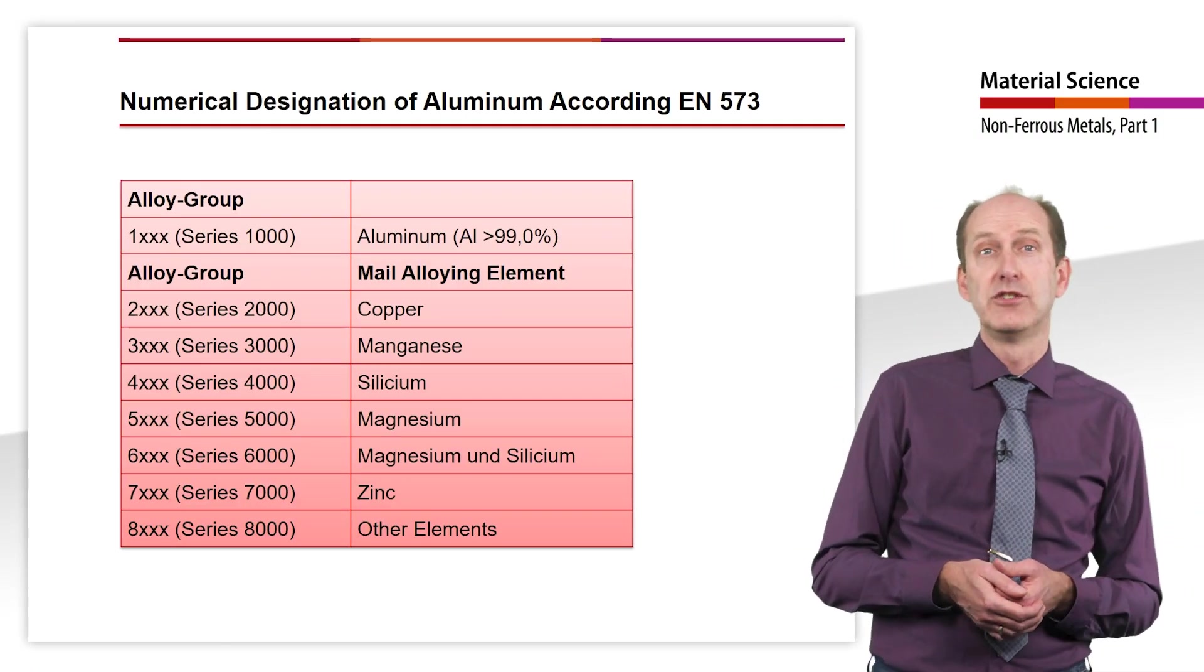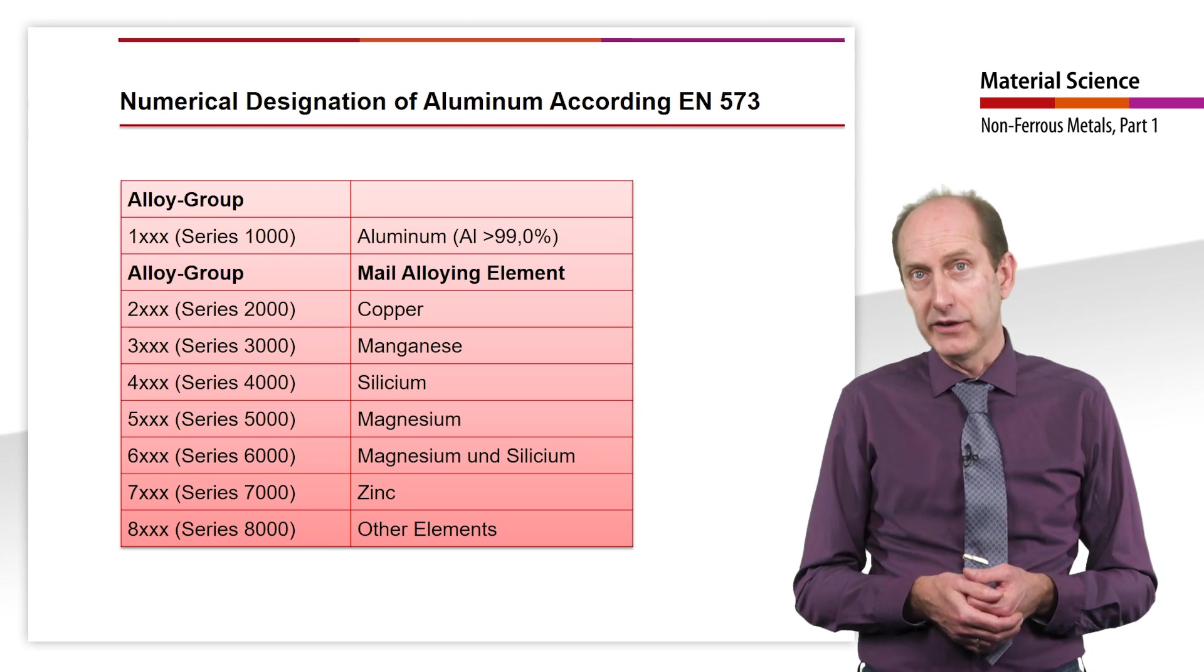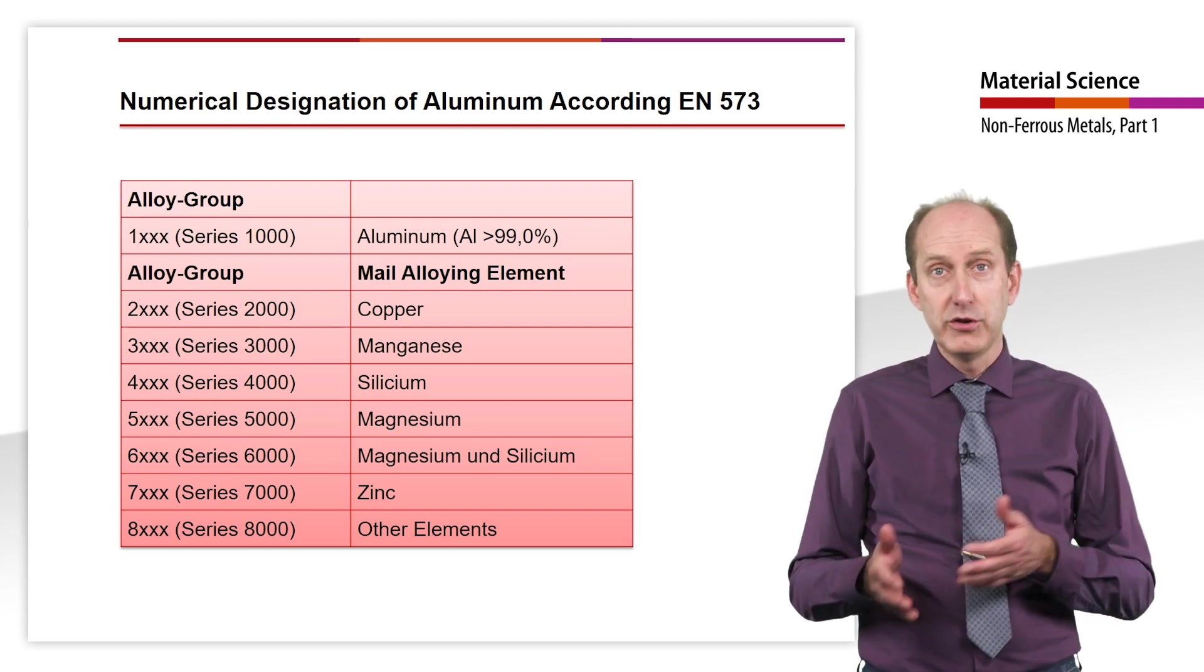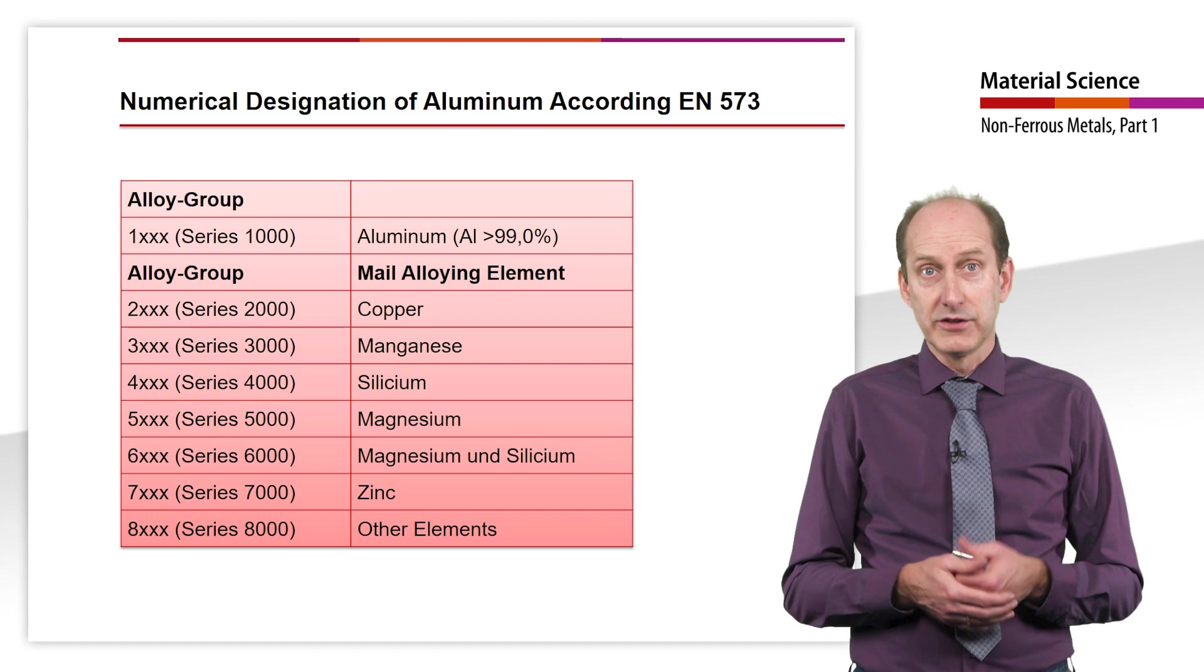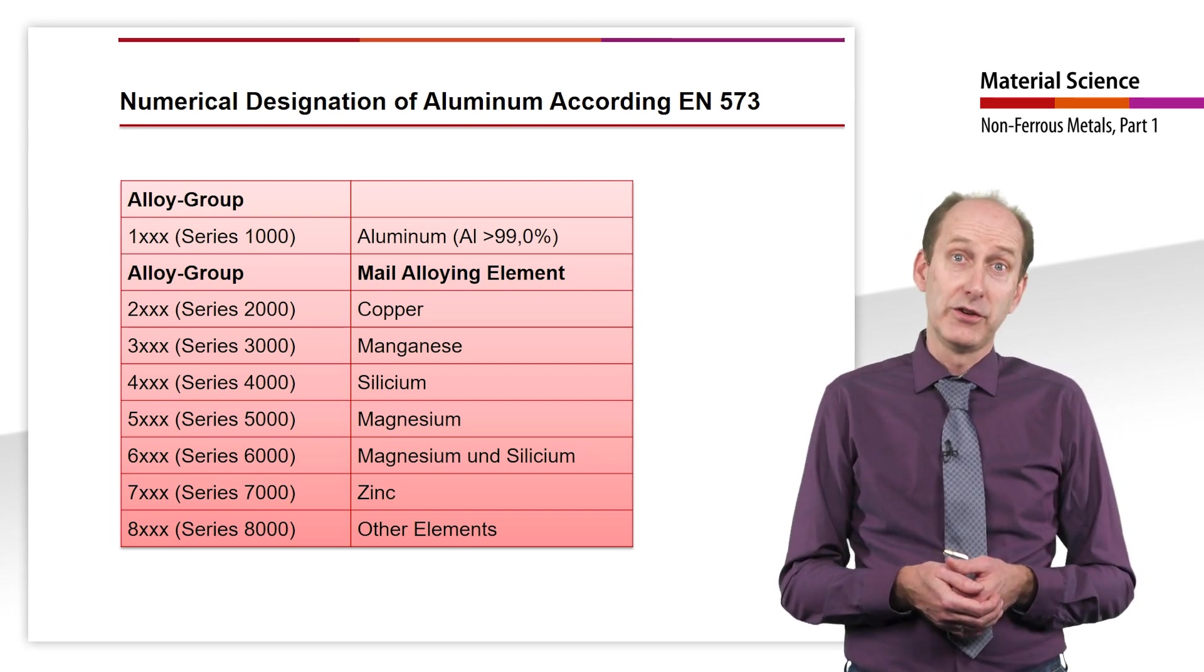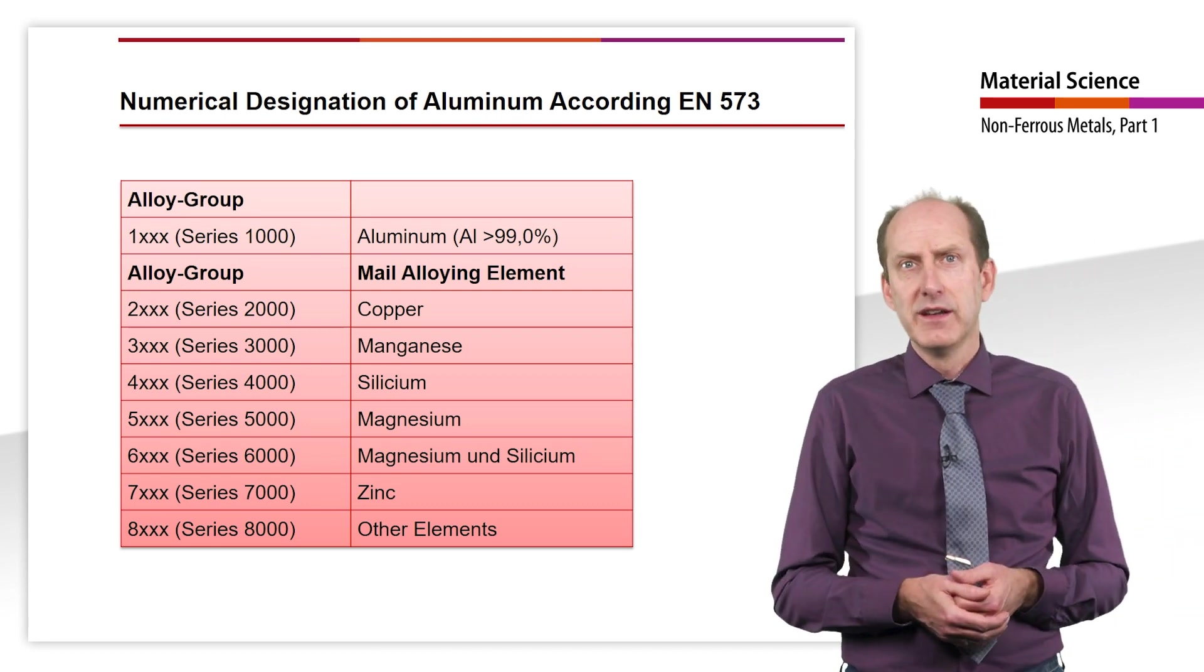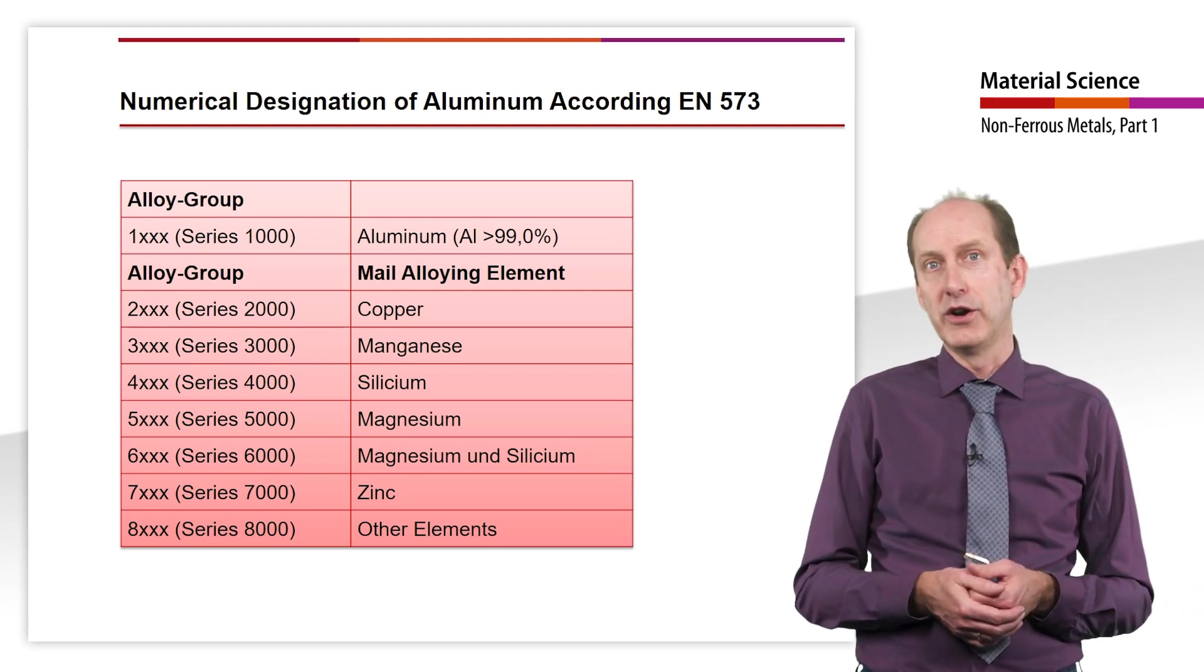The European standard has largely adopted the American system for the numerical designation of aluminum in accordance with EN 573. In this system, aluminum materials are divided into 1000 series from 1000 to 8000, according to the main alloying elements. Pure and purest aluminum with an aluminum content of more than 99% is assigned to the 1000 series. The third and fourth digits of the designation indicate the decimal places after the 99%, so that the degree of purity can already be read from here within 0.01%.